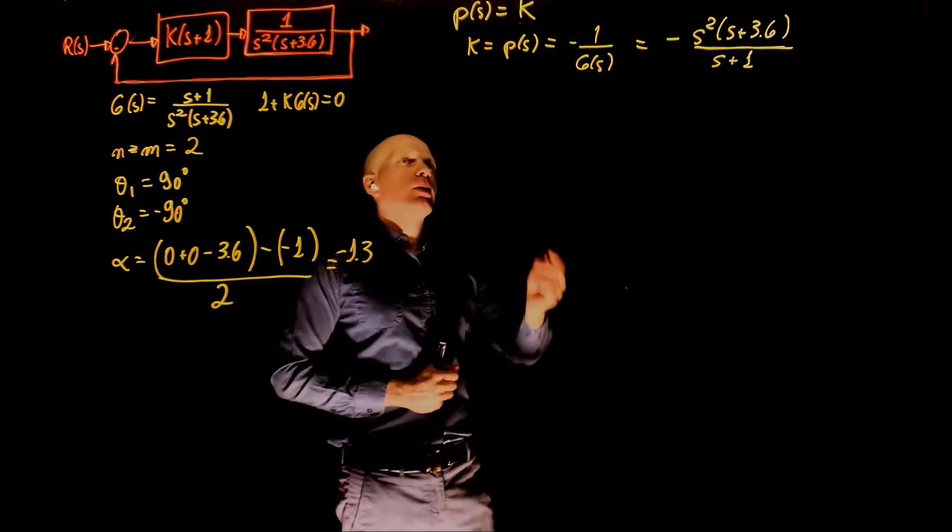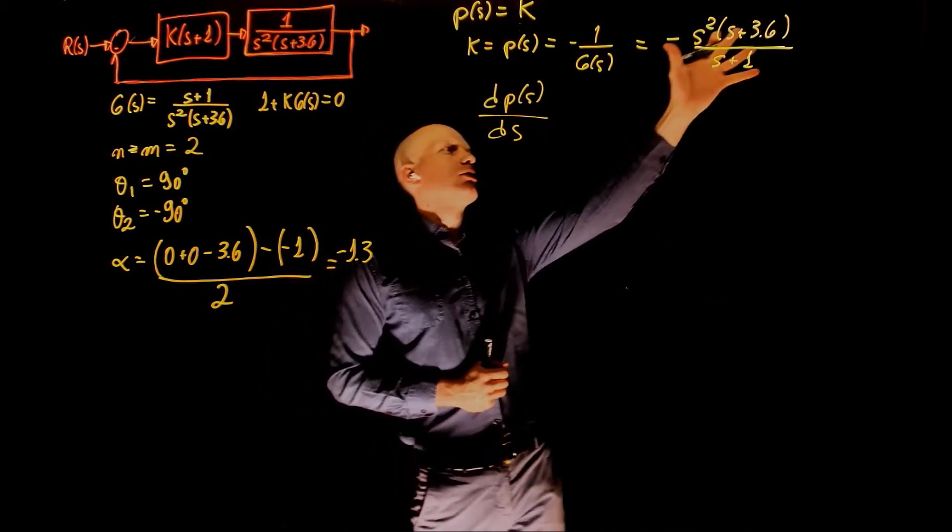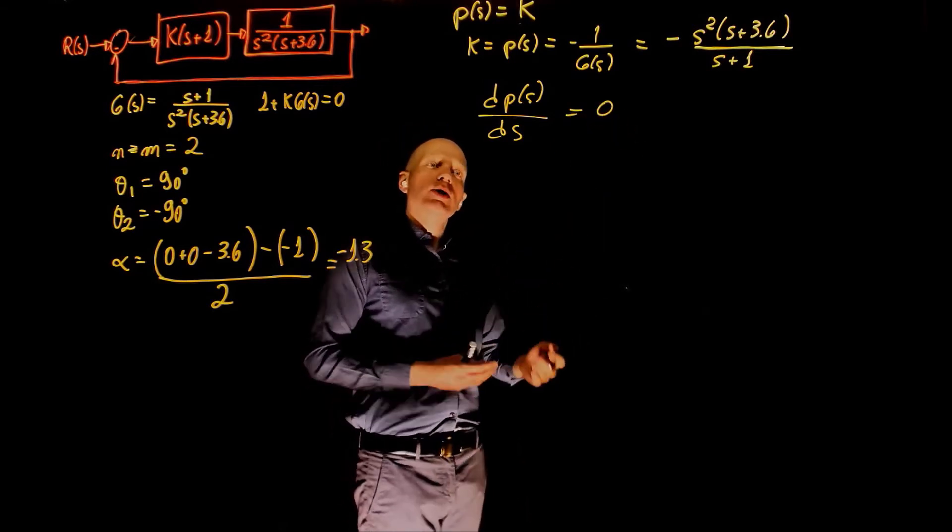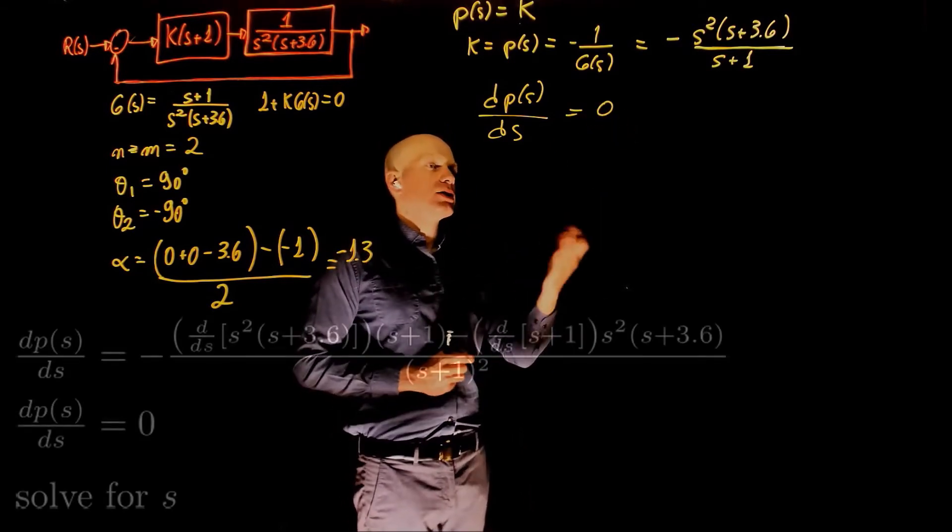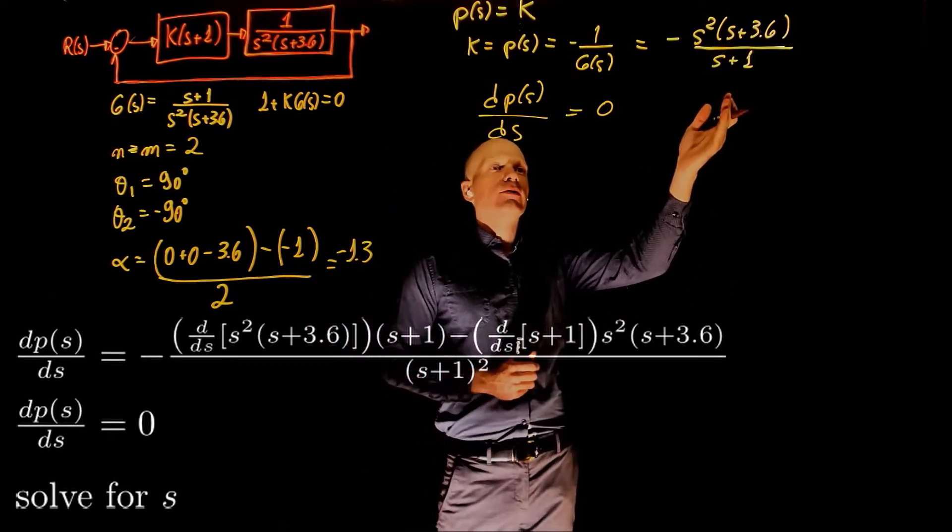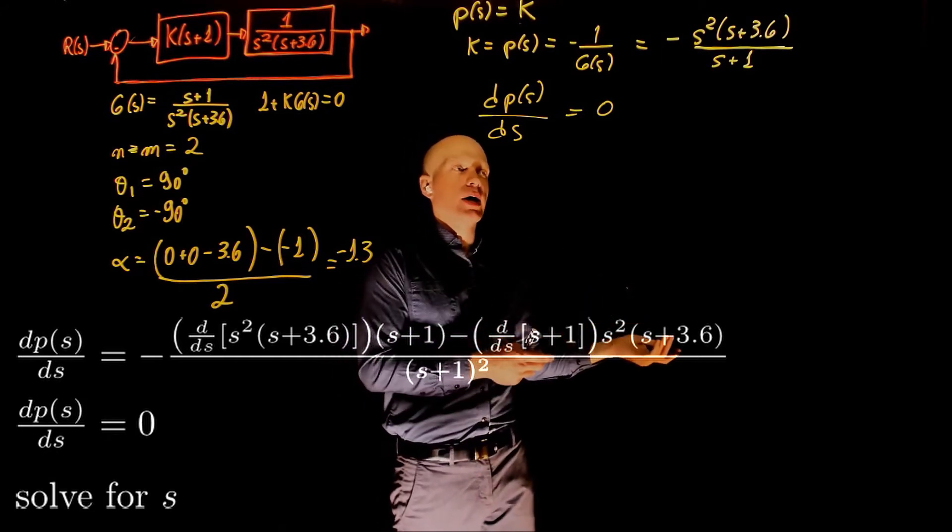Now to find the breakaway points, we need to take the derivative of p of s with respect to s and set that to 0. As we saw in the previous example, this is easy to calculate. We have two fractions here, we can take the derivative of them, following the rules that we saw in the previous exercise, set that to 0, and solve for s.